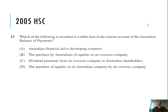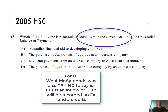Last question for this video — from the 2005 HSC: which of the following is recorded as a debit item in the current account of Australia's balance of payments? Let's take it bit by bit, starting with D: the purchase of equities in an Australian company by an overseas company. That's going to be an inflow of capital, which would be a credit, so it's not a debit item.